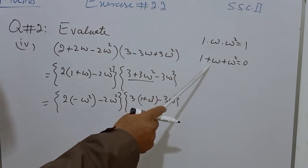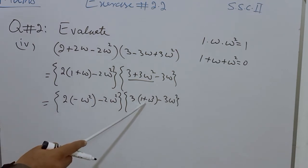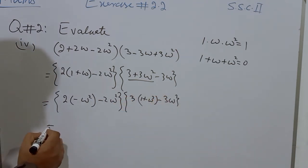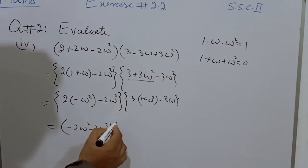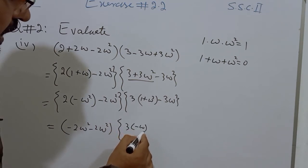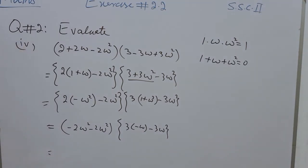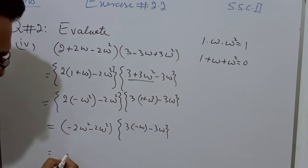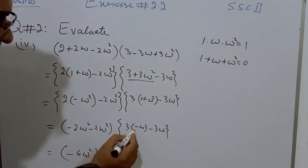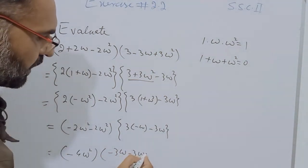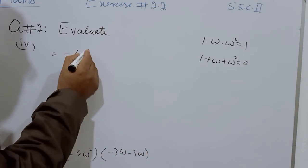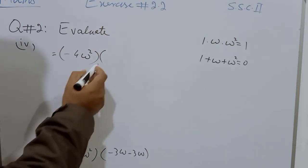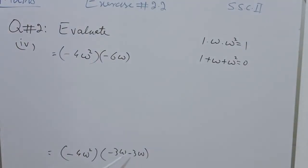In place of 1 plus omega squared, transfer omega to the other side so it becomes minus omega. We have 2 times (minus omega squared) and in the bracket, 3 times (minus omega minus 3omega). Minus omega squared and minus omega squared give minus 4omega squared, and minus 3omega and minus 3omega give minus 6omega. When two numbers have the same sign, we sum both numbers and keep the same sign.